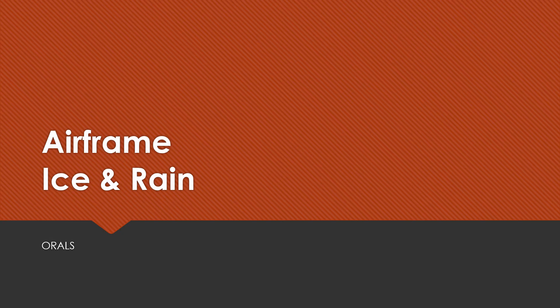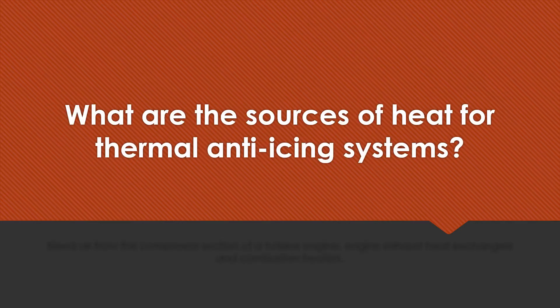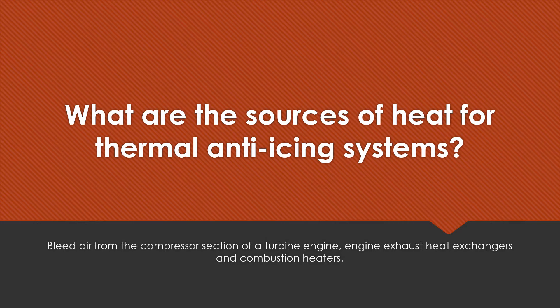Airframe ice and rain oral questions. What controls the temperature in a thermal anti-icing system? Hot and cold air being mixed. What are the sources of heat for thermal anti-icing systems? Bleed air from the compressor section of a turbine engine, exhaust heat exchangers, and combustion heaters.